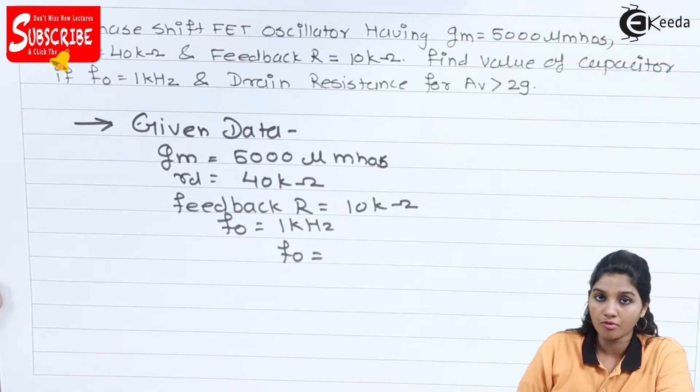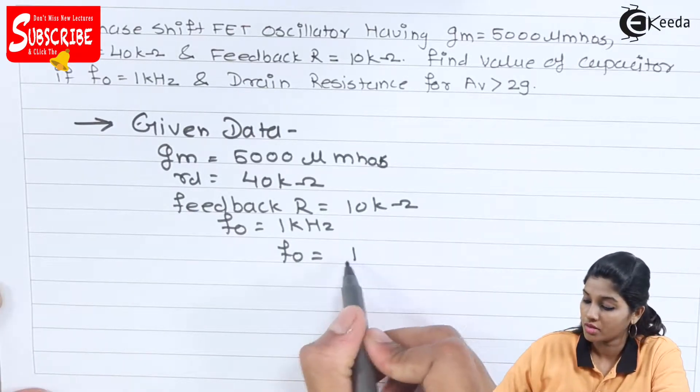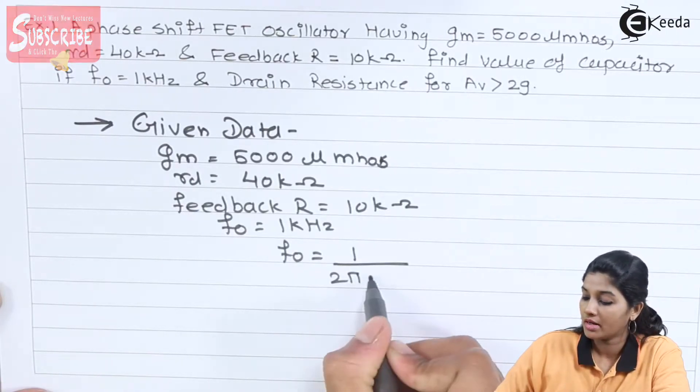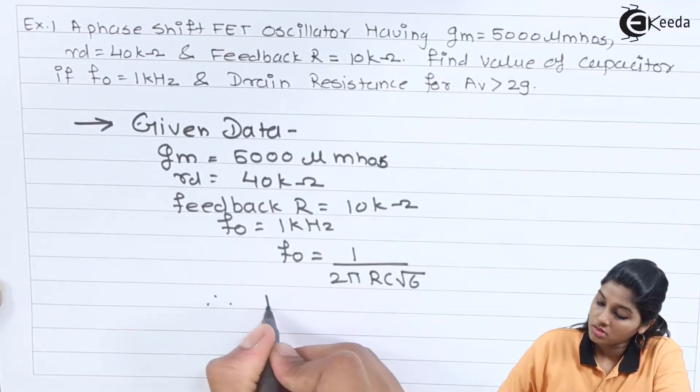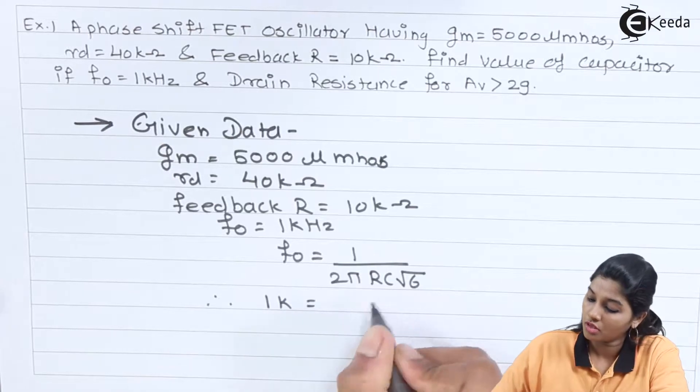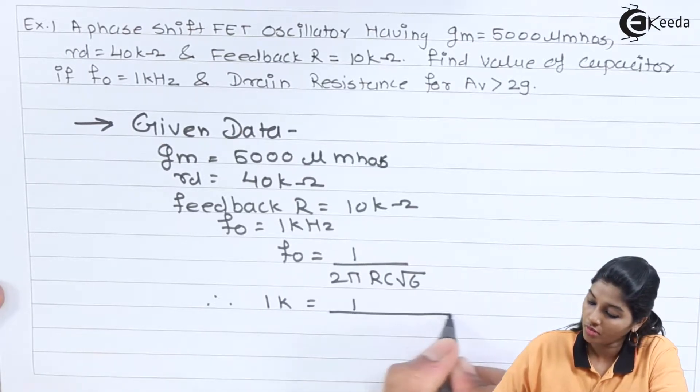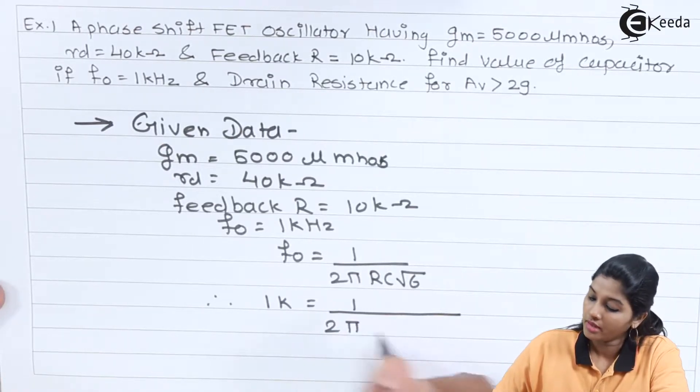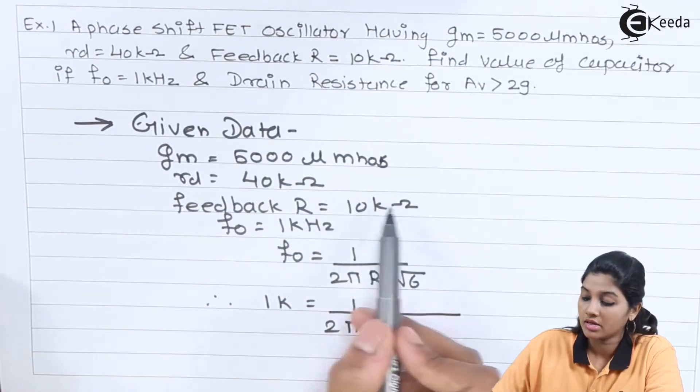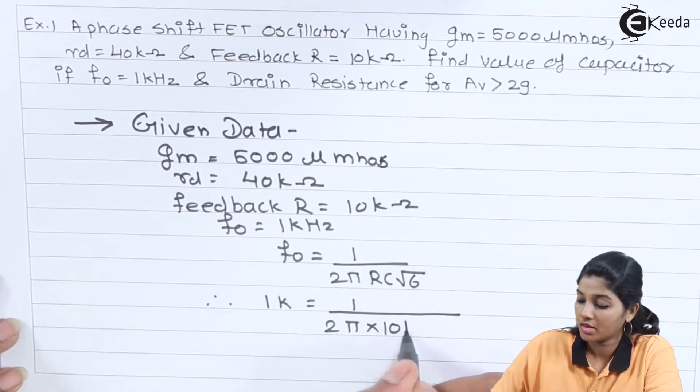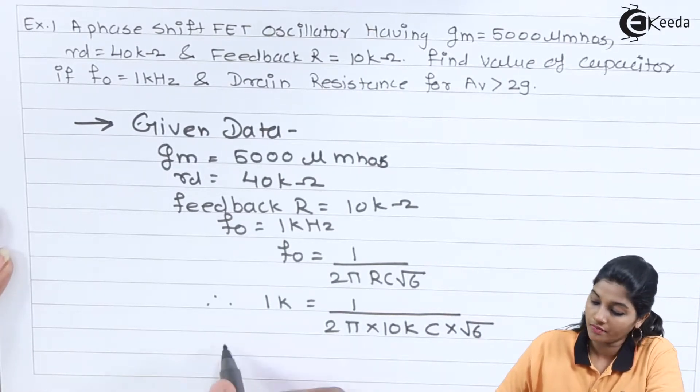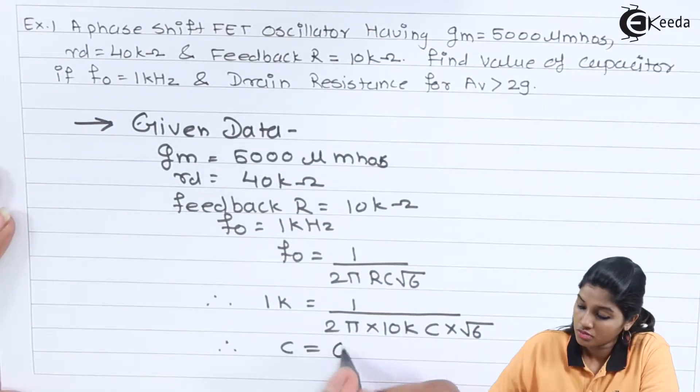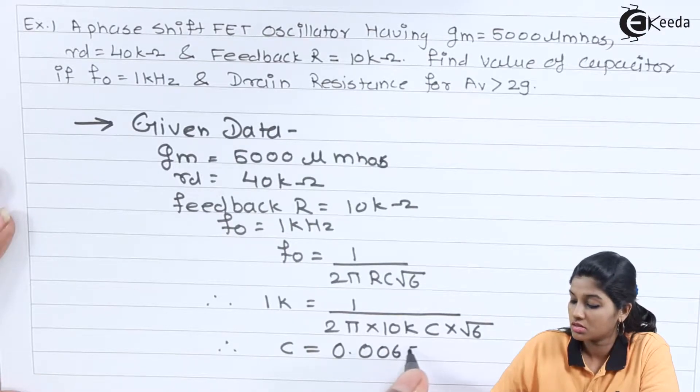So formula for F0 for RC phase shift oscillator is 1 upon 2 pi RC into square root of 6. So 1 kilo equals 1 upon 2 pi, value of resistor given as 10 kilo ohms, so multiply by 10K, C we need to find out, into root 6. So C is equal to 0.0065 microfarad.